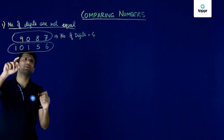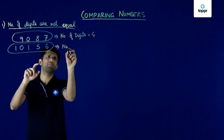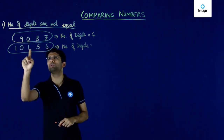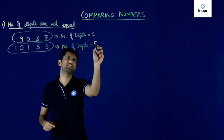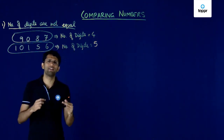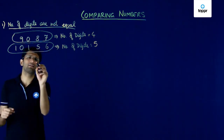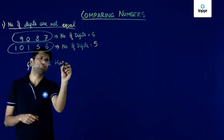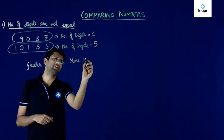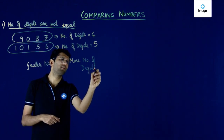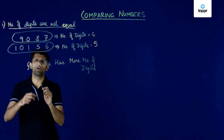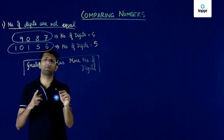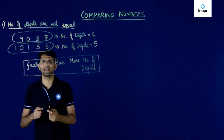Similarly, if you look at the second number and count the number of digits, you will realize that it has 5 digits: 1, 2, 3, 4, 5. So the number of digits is 5. Whenever we are comparing two numbers with different number of digits, the greater number is the one that has more digits. So the smaller number is the one with fewer digits.